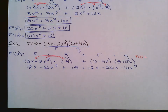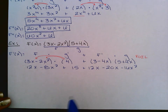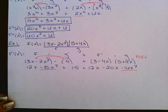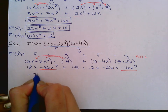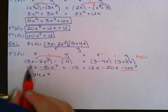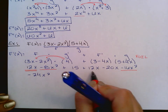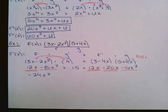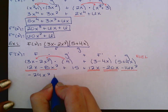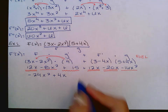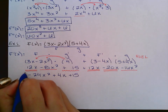Combining like terms: we have a negative 8x² and a negative 16x², giving negative 24x². Then positive 12x and negative 20x gives positive 4x, sorry — positive 12x and negative 20x gives negative 8x. Wait — positive 12x and negative 20x gives −8x, plus 15. The final answer is −24x² + positive 4x... combining properly gives the final simplified answer.